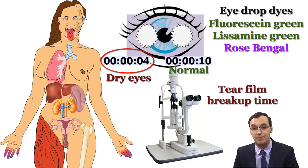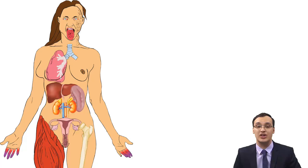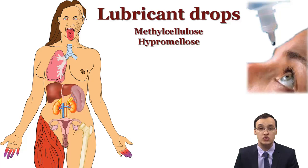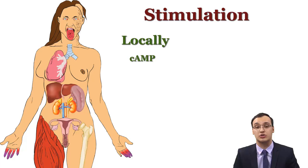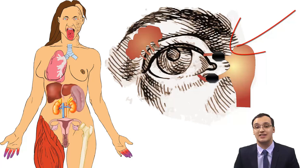Treatment for dry eyes includes avoiding drugs that cause dryness, such as anticholinergics, diuretics, antihistamines, and antidepressants. We can use artificial tears or lubricant drops like methylcellulose or hypromellose. We can stimulate lubrication locally with cyclic AMP or 2% pilocarpine solution, or stimulate systemically with pilocarpine or cevimeline. In severe cases, tiny plugs can be placed in the tear drainage ducts, or in extreme cases a corneal transplantation may be needed.